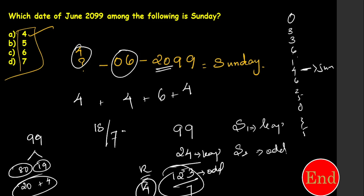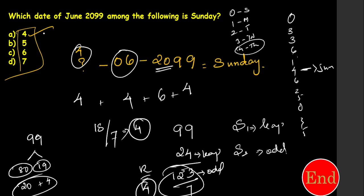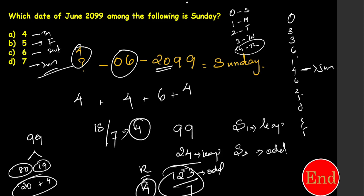Odd day 4 corresponds to Thursday. So June 4, 2099 is Thursday. If 4 is Thursday, then 5 is Friday, 6 is Saturday, and 7 is Sunday. So June 7, 2099 is a Sunday. We selected any one date and worked from there to find the answer.